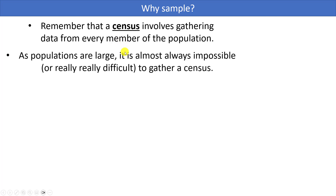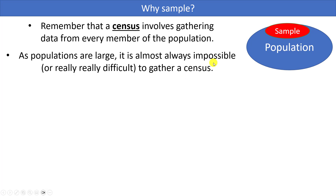A census would be gathering data from every single member of that population. But populations are typically very large — sometimes containing thousands or even millions of individuals. So in most cases, it's going to be impossible or very difficult to gather a census. Researchers are going to settle for a sample, a subset of the population, hoping that their sample is somehow representative of the population — basically the same as the population, just a smaller group.